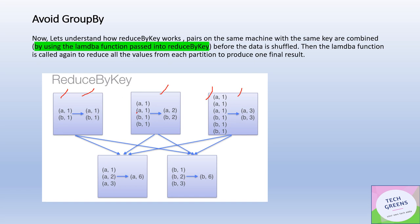Post that, it tries to shuffle the similar keys, the common keys, onto the common partition. This way shuffle has happened, but the shuffle has been minimized because the reduce had already happened at the partition level, individual partition level itself. So it has reduced a lot of data which could be shuffled. Here the shuffling which is happening, though something is unavoidable, that has been minimized.